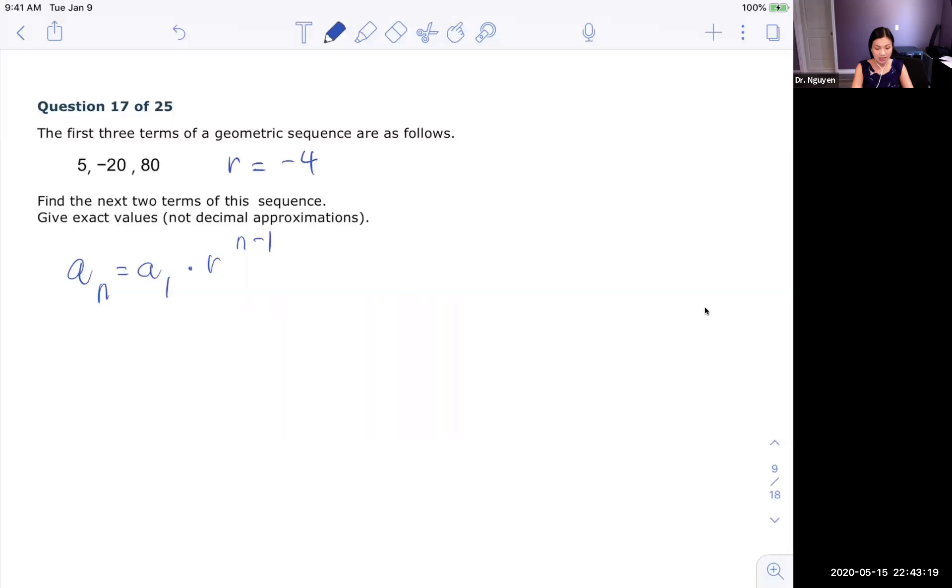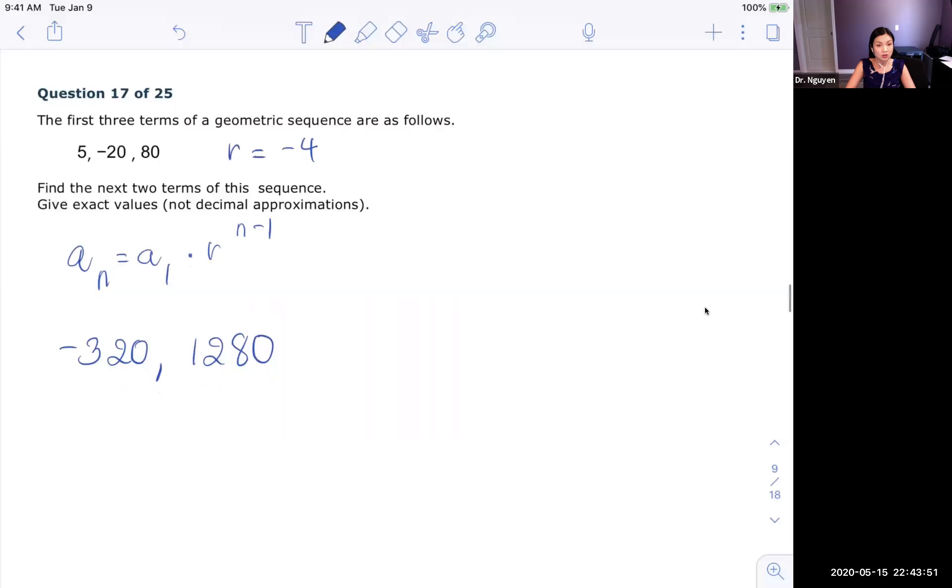The common ratio is negative 4. So negative 20 times negative 4, that's how you get 80. And then 80, you're going to multiply by negative 4, and that's how you get negative 320. And then you multiply by negative 4 one more time, you get 1280. So that's how you find the next two terms. And if you keep multiplying by negative 4, you're going to get the next number.